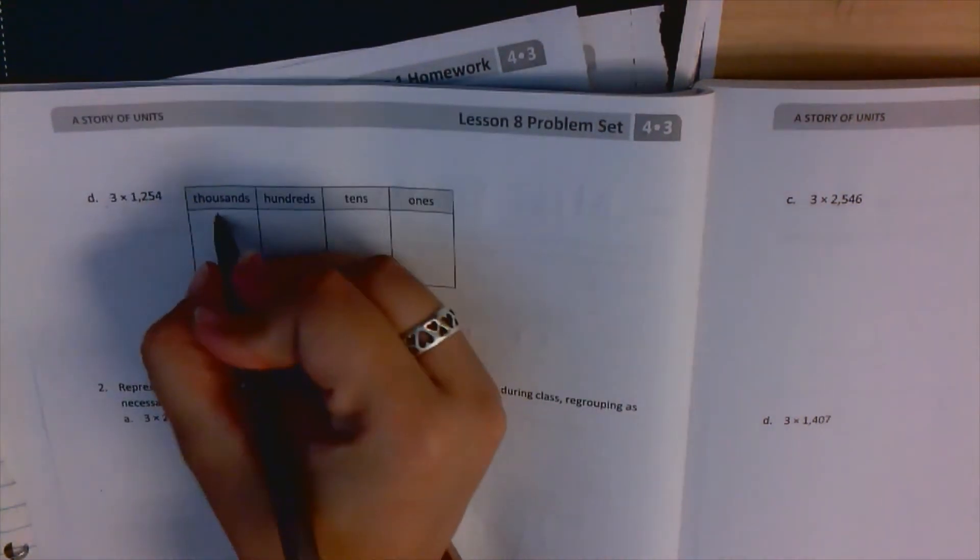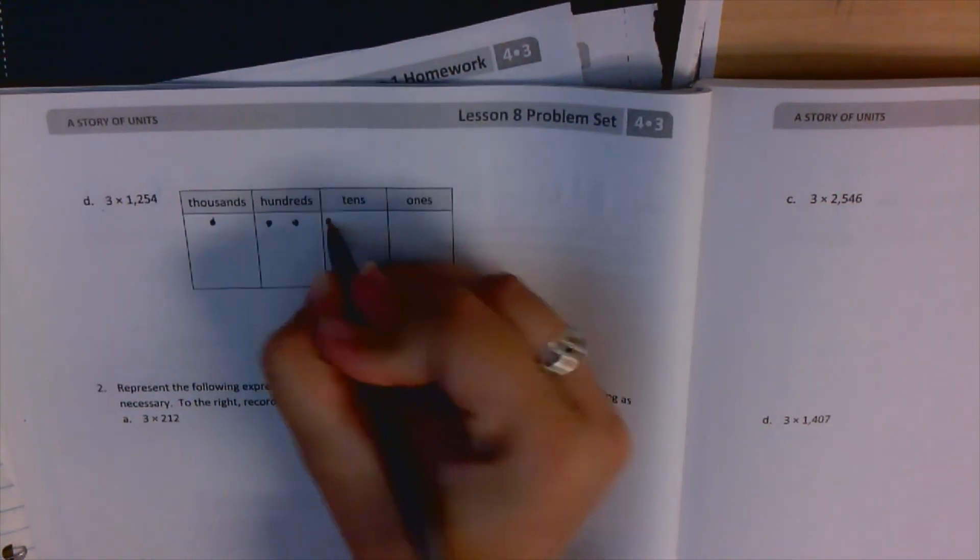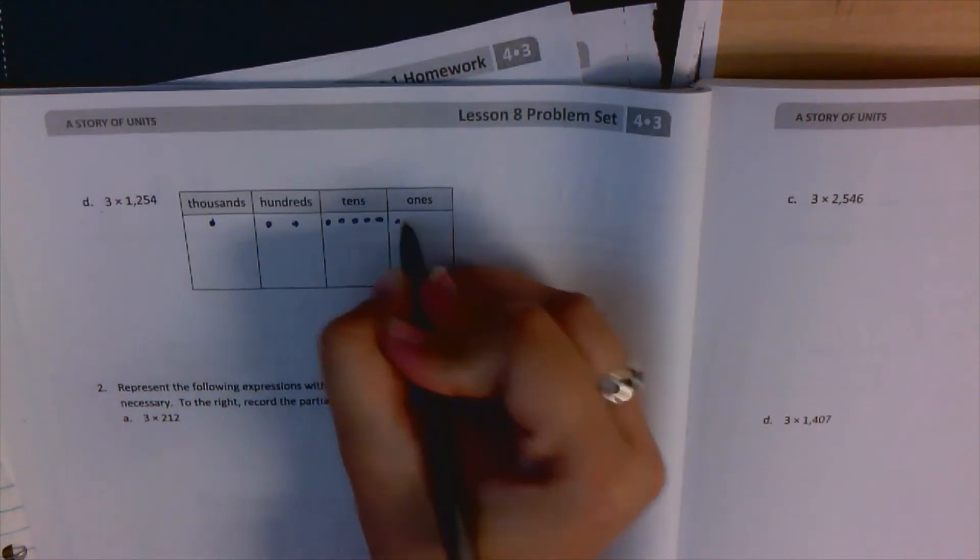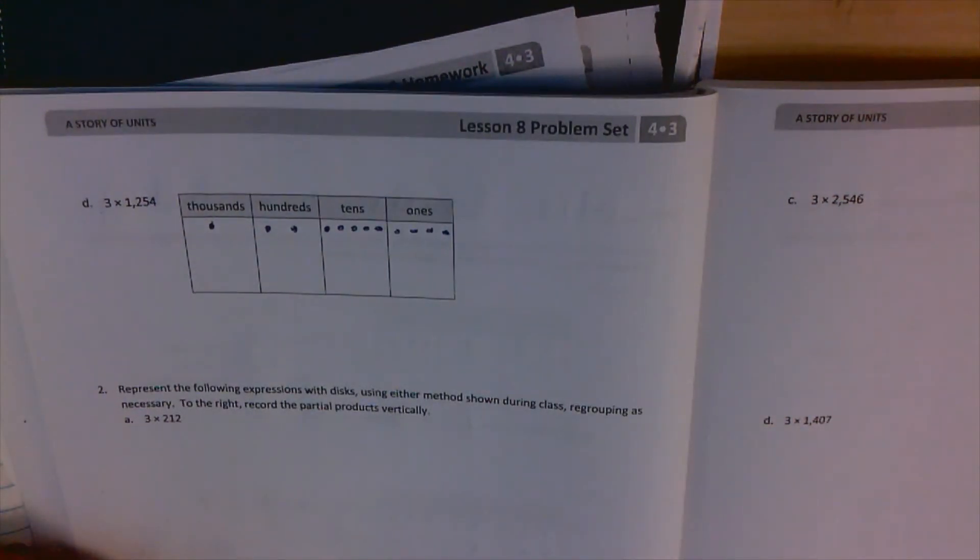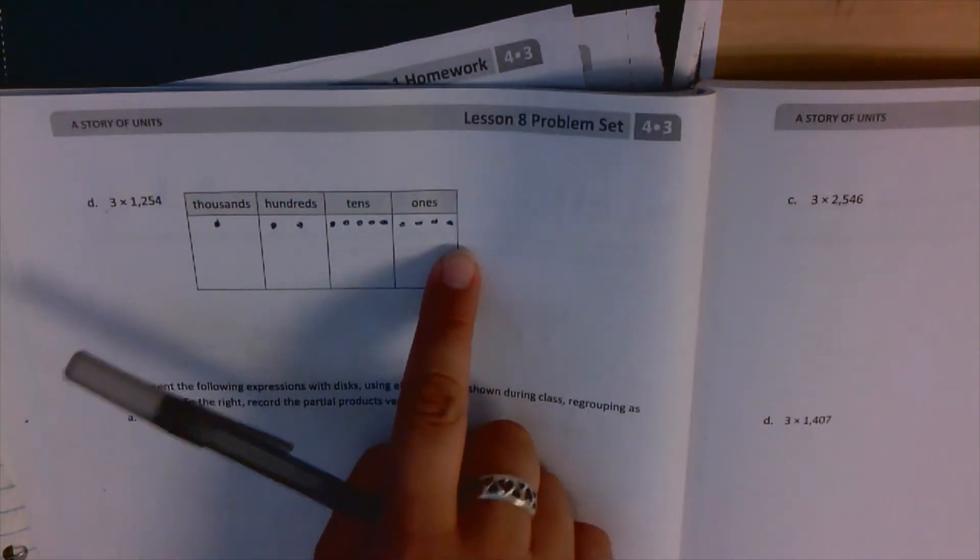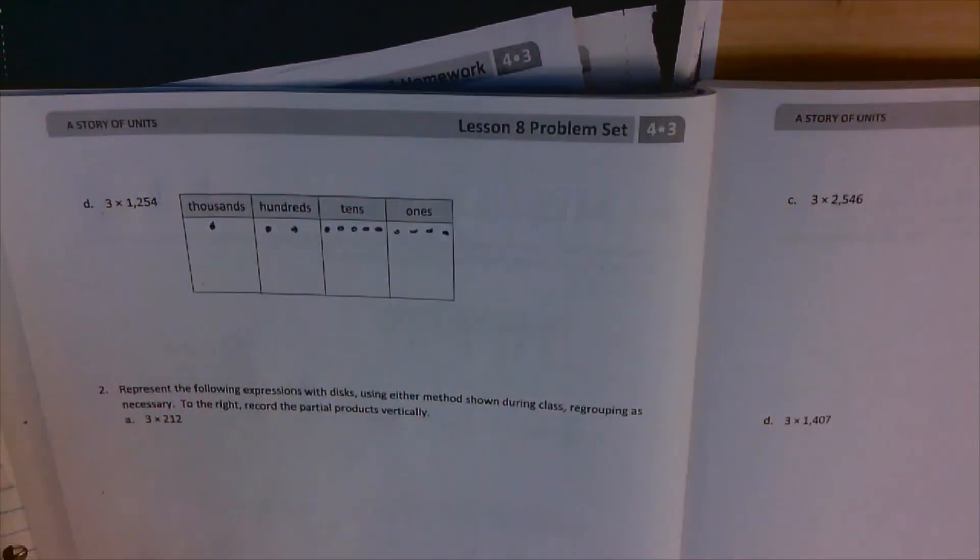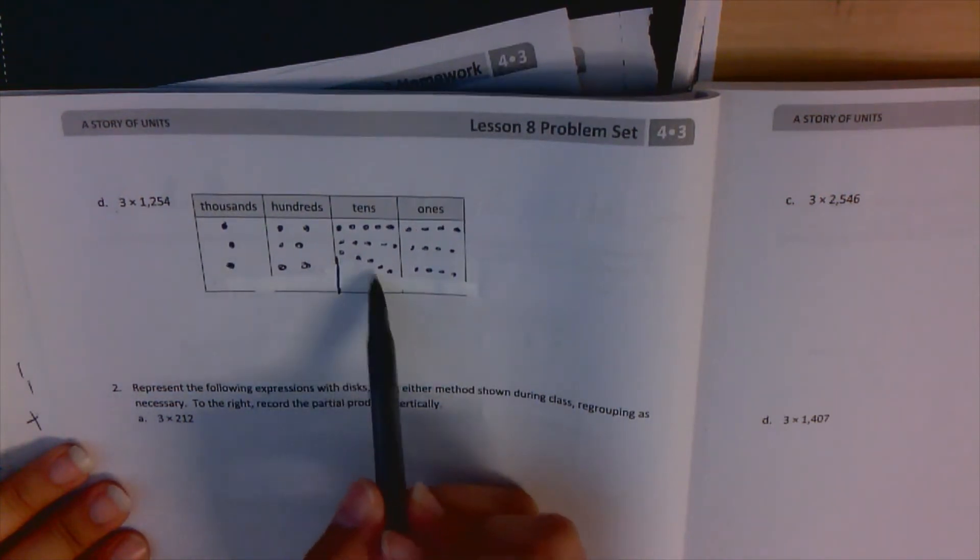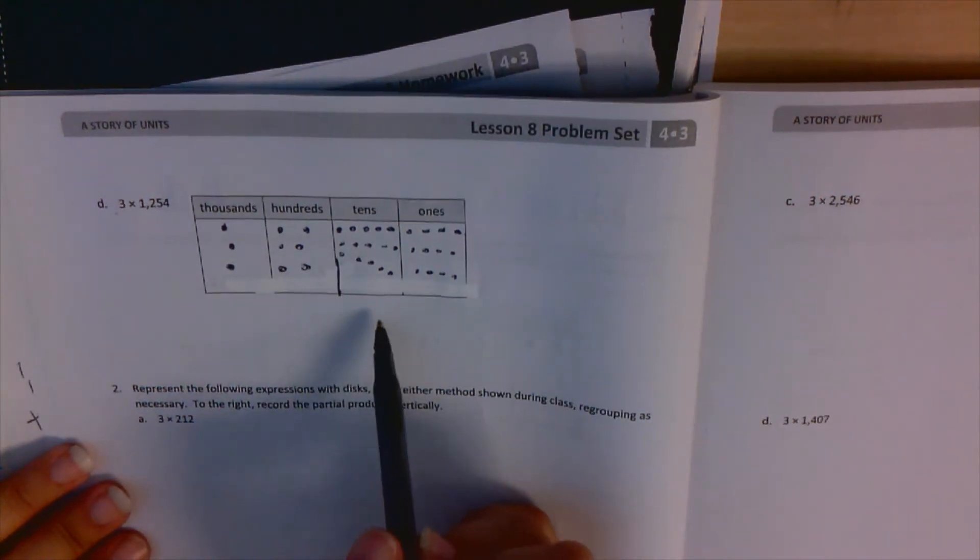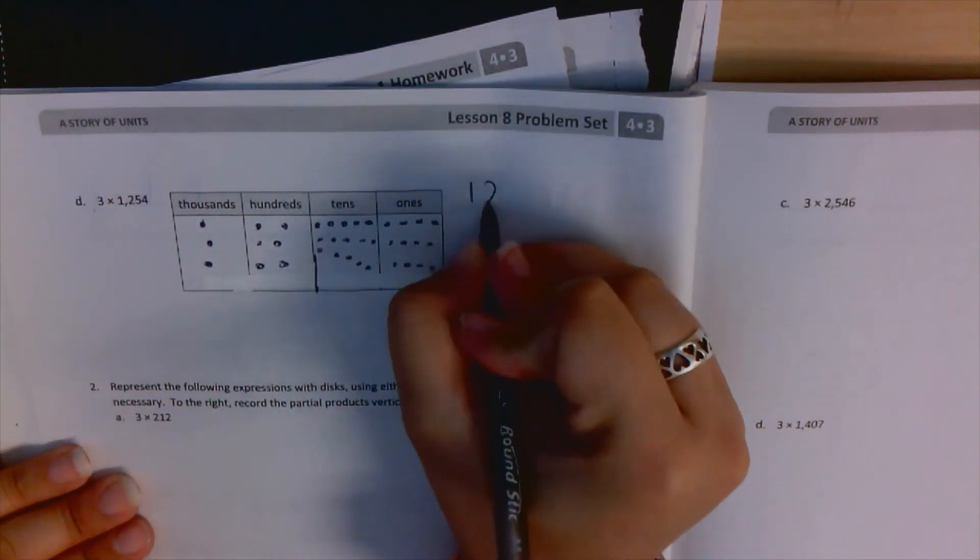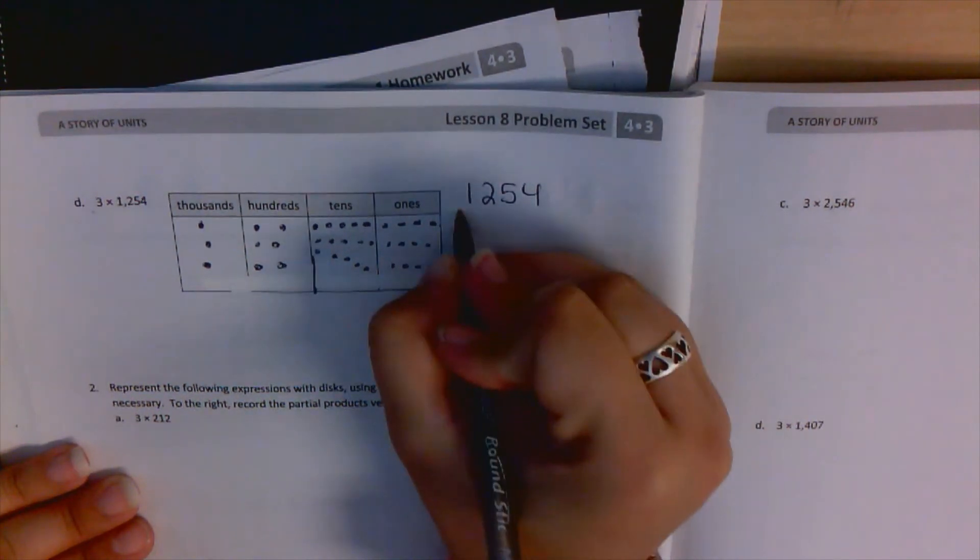So we have 1,250, ten, twenty, thirty, forty, fifty. And we want that 3 times. So that's the first time. I'm going to do it a second time. I'm going to do it a third time. I have 1,254 three times. And yes, I made a little error. I got a little excited when I was doing the dots.